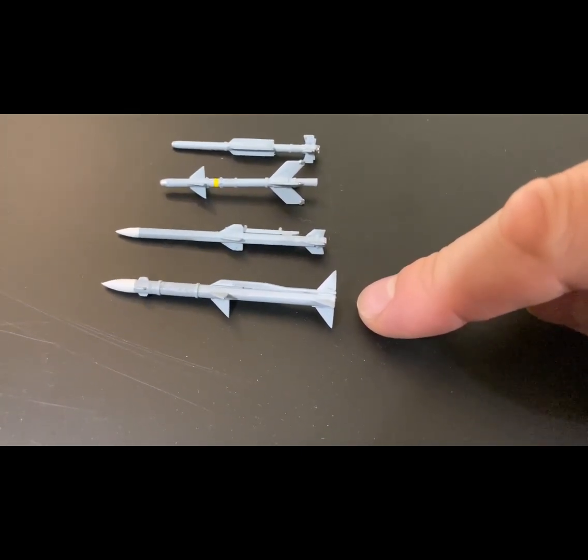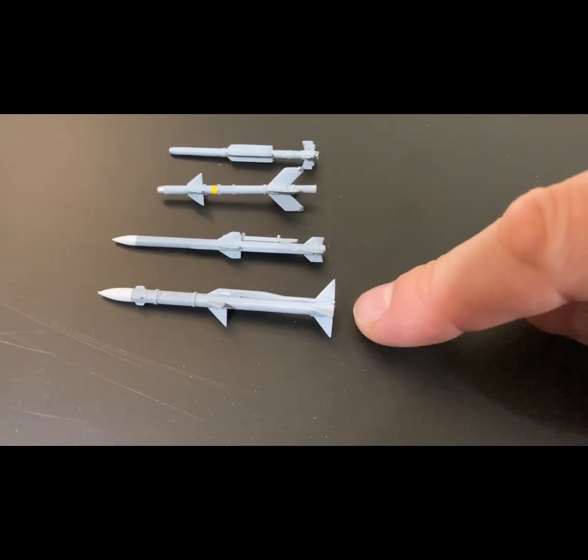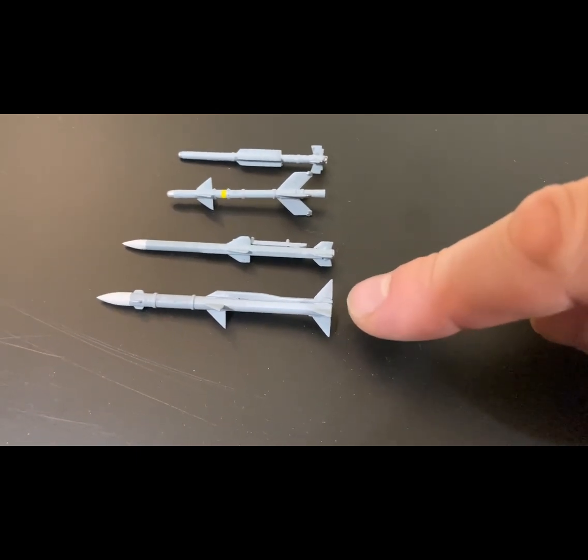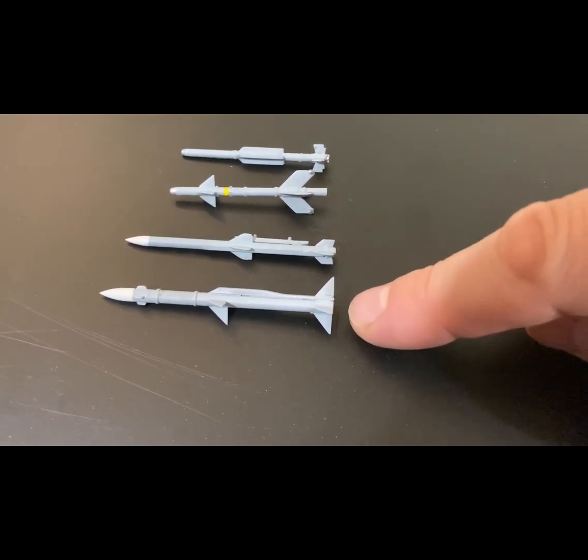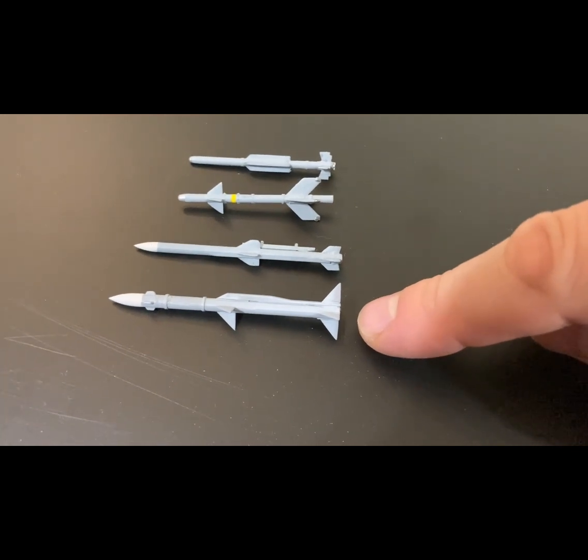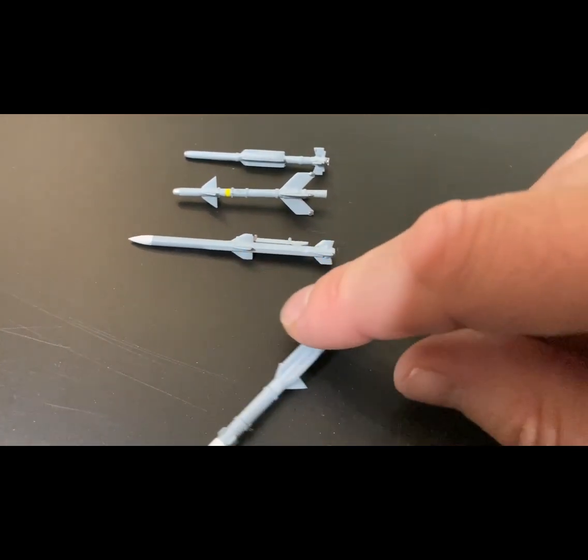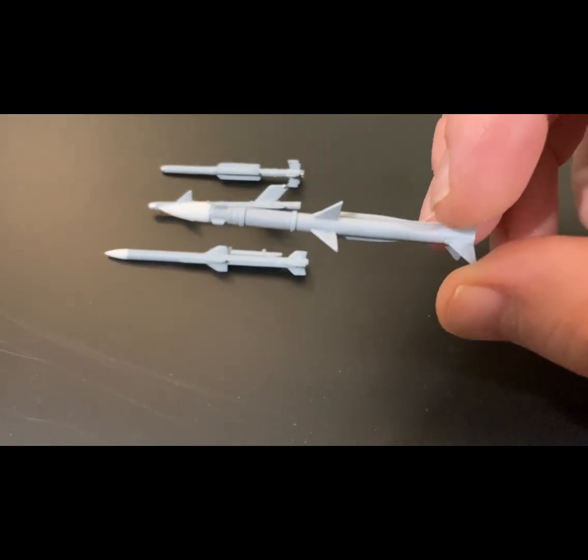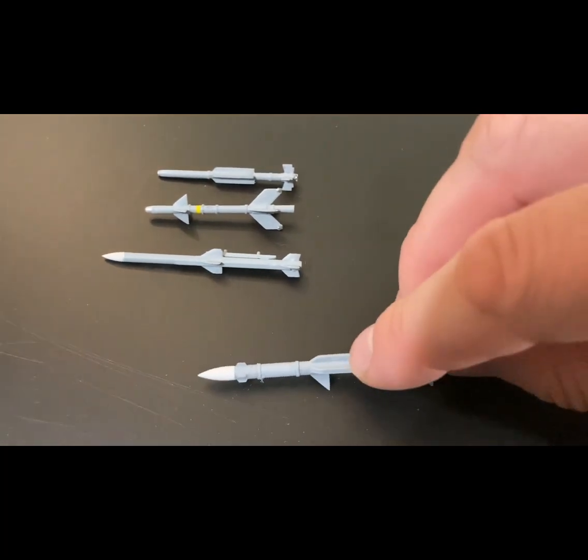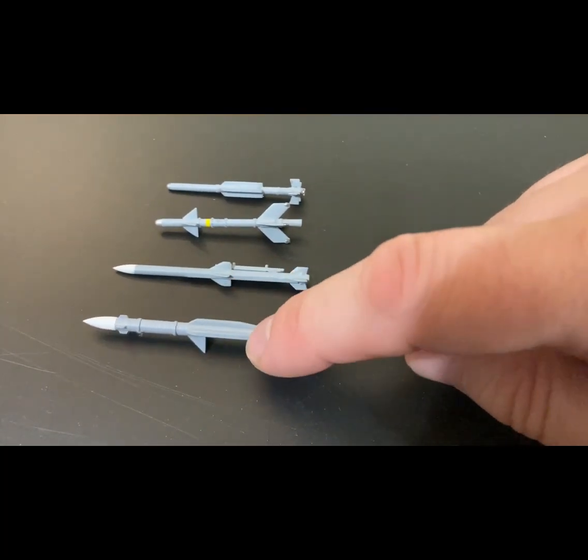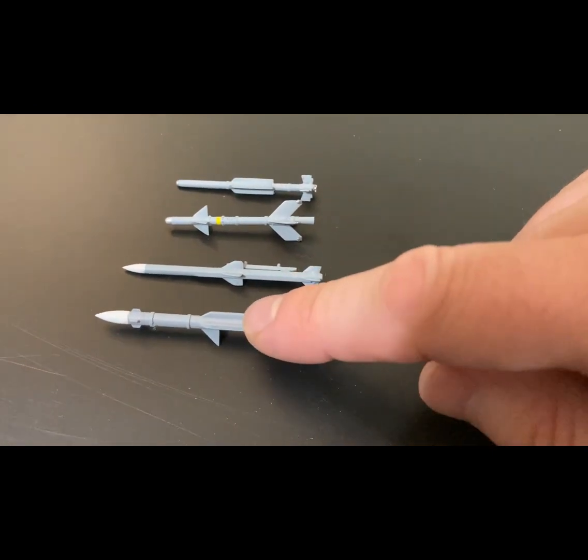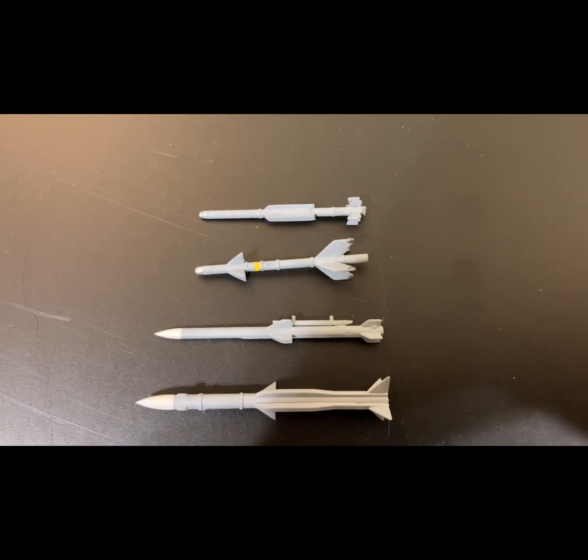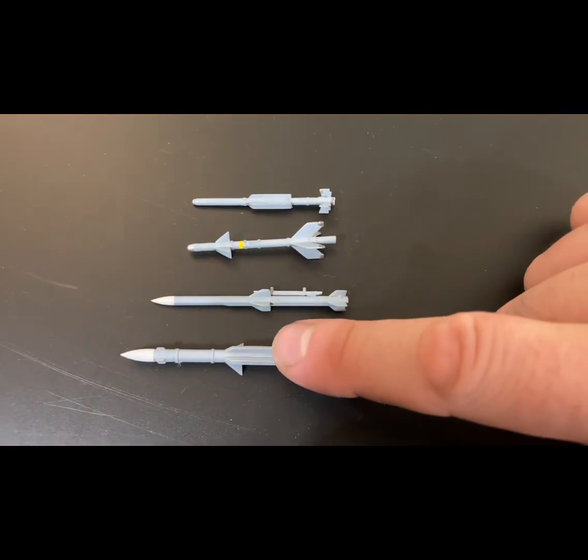And last but not least, we have the PL-21. There is one more missile which I need to cover, which is the PL-12. Now Trumpeter say that this is the PL-13. I disagree. I believe that this is the PL-21. I could be wrong, so let me know if I am, but this is a ramjet-powered, extremely long-range missile, the equivalent of the Meteor missile. But when you look at the size comparison, it is huge, and for that reason I believe that this is the PL-21.